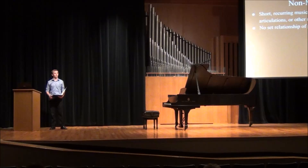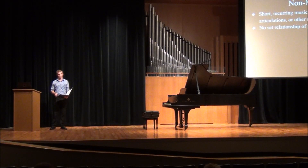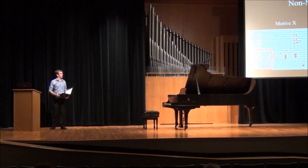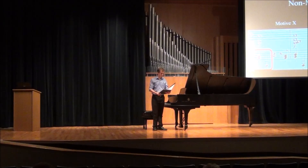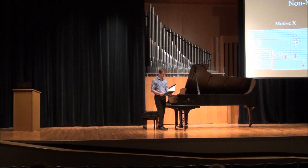The first type — non-melodic motives — are short, recurring musical ideas that can be built on rhythms, articulations, and other musical gestures. They have no set relationship of pitch or interval. The first two examples appear in the first measures of this piece. These are called motive X and motive Y, circled in red. Motive X is a two-note motive in which two notes jump apart an octave or more. Motive Y is two chords with a short-long rhythm.